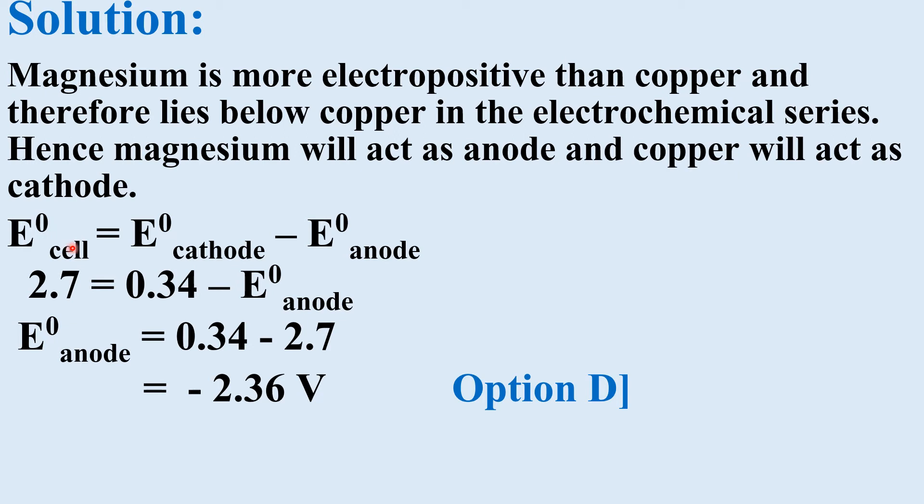Apply the formula E°cell equals E°cathode minus E°anode. Here EMF of the cell is given 2.7V. Standard reduction potential of copper is also given, that is cathode, that is 0.34V. And that of standard reduction potential of magnesium you have to find out. So substitute the values and work out, you will get standard reduction potential of magnesium, that is minus 2.36V.